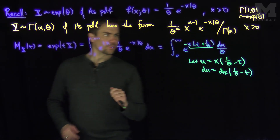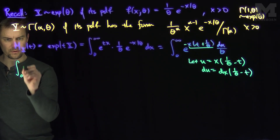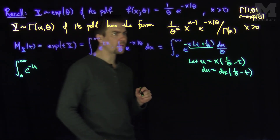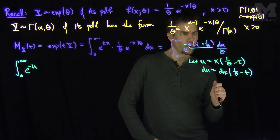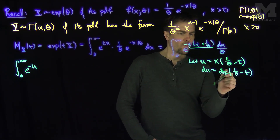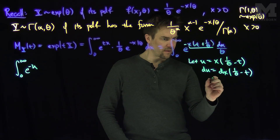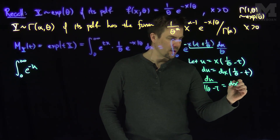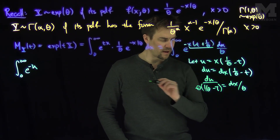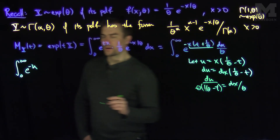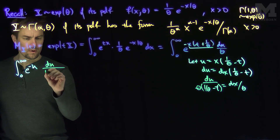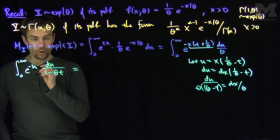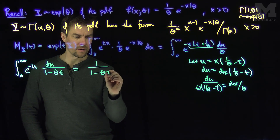After substituting, the integral becomes the integral from zero to infinity of e^(−u) · (dx/θ). Here dx/θ becomes du/(1 − θt), since dx = du/(1/θ − t), and dx/θ = du/(1 − θt). The integral of e^(−u) du evaluates to 1, giving us 1/(1 − θt). That's the moment generating function of an exponential distribution.